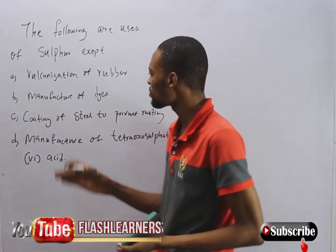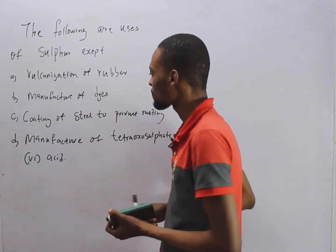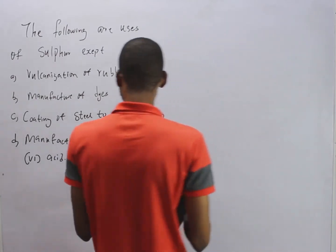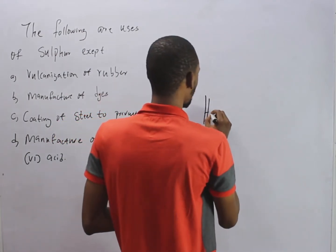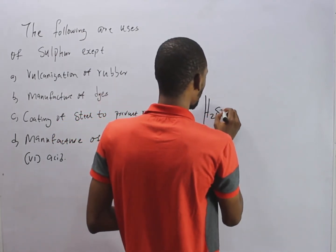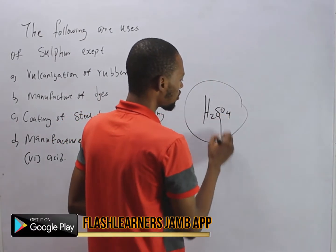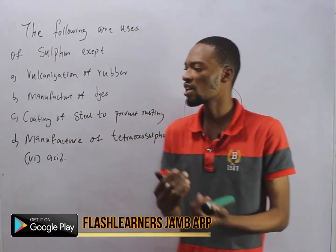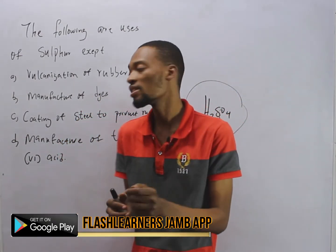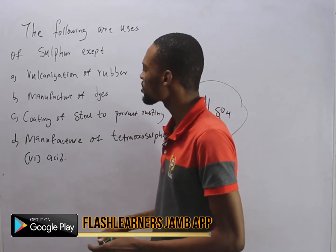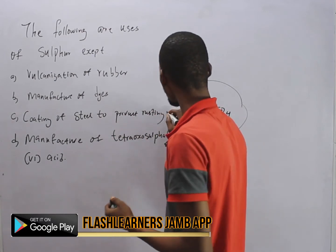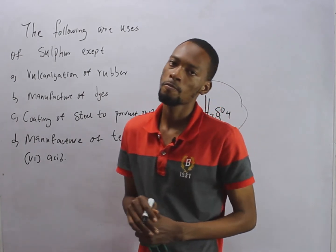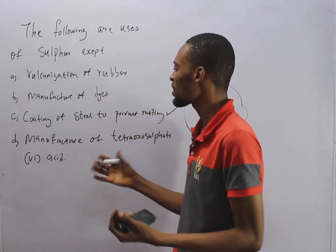Sulfur can also be used to manufacture dyes. Sulfur is used for the manufacture of tetraoxosulfate(VI) acid — from the formula H₂SO₄ you can obviously see that there is sulfur here. So sulfur can be used to manufacture H₂SO₄. But coating of steel to prevent rusting — I doubt that.